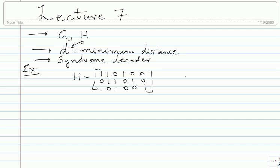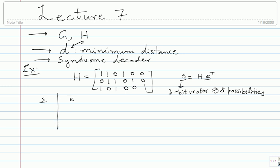To build a syndrome decoder, you solve S = H × E^T for each possible S. Since S is a three-bit vector, you have eight possibilities. You can do this ahead of time for small cases and build a syndrome table with S in one column and Ê in the other. Let me write down all the possible syndromes and solve for the minimum weight E for each.